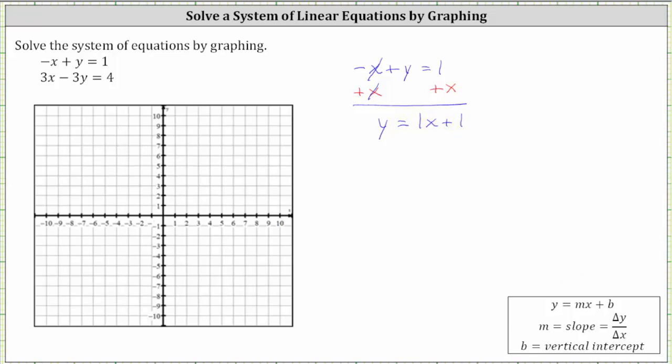In this form, we can see the slope m, which is the coefficient of x, is equal to one. We always want the slope to be in fraction form so that we can use the slope to graph. So let's write one as one over one. And then b, the vertical intercept, is equal to positive one, which means the vertical or y-intercept is the ordered pair zero comma one.